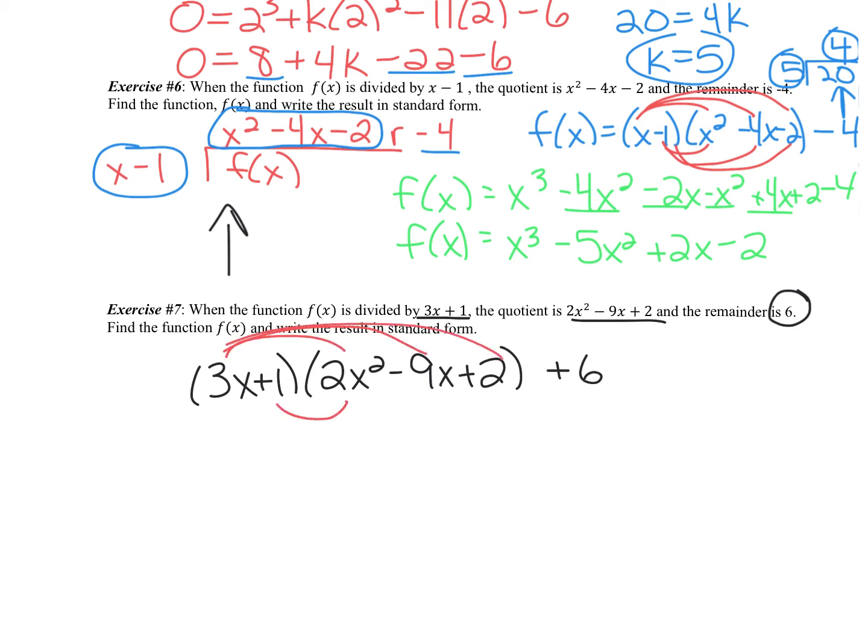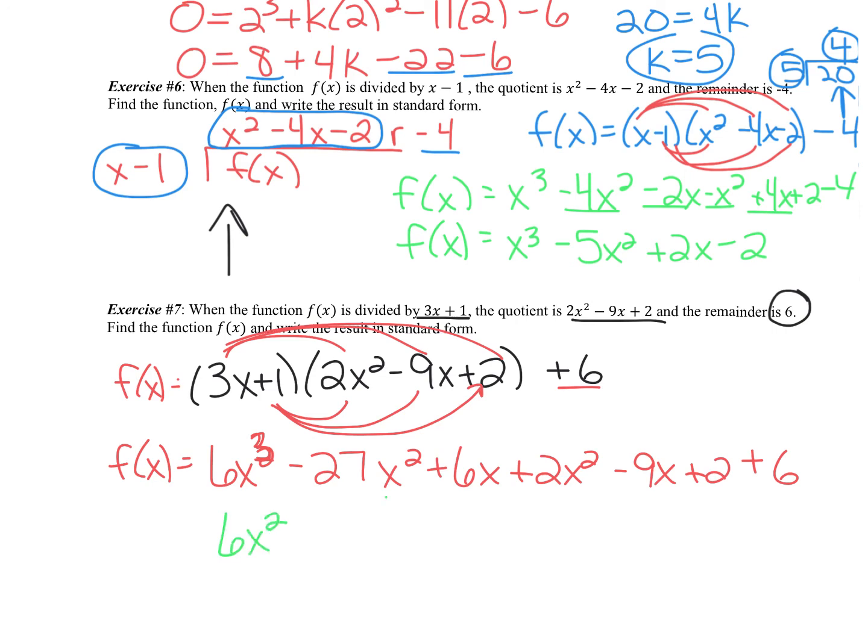Distributing, to put it in standard form, and this is f of x just so we can write that, we get 6x cubed minus 27x squared plus 6x plus 2x squared minus 9x plus 2, and then tack on plus 6. Combining like terms, we have 6x cubed, negative 27x squared plus 2x squared is negative 25x squared, 6x minus 9x is negative 3x, and then 2 plus 6 is 8.